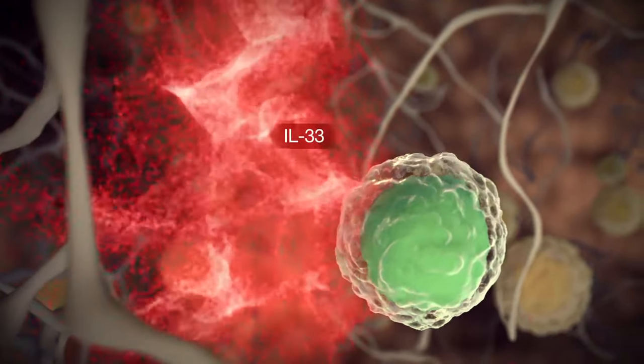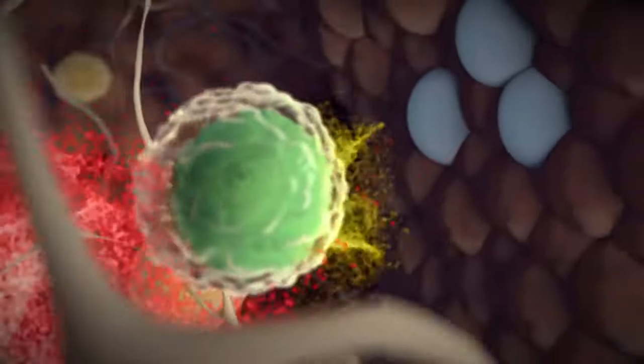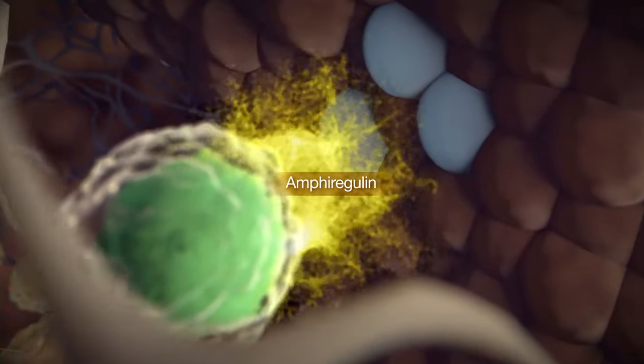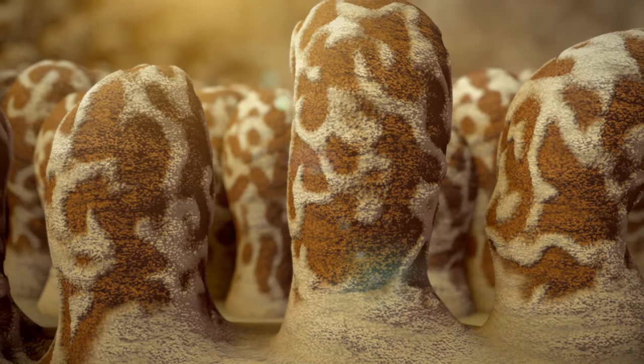In response to IL-33, ILC2s also make amphiregulin, which induces tissue repair following worm clearance.